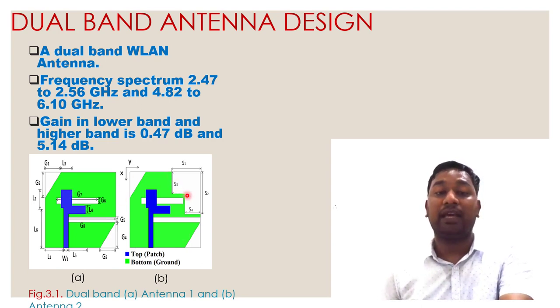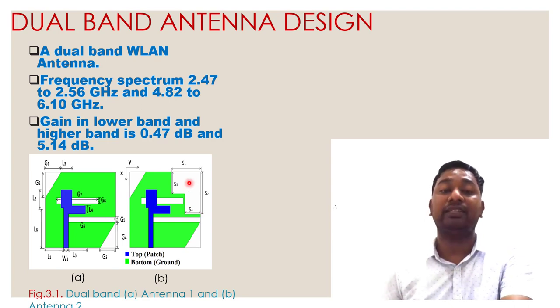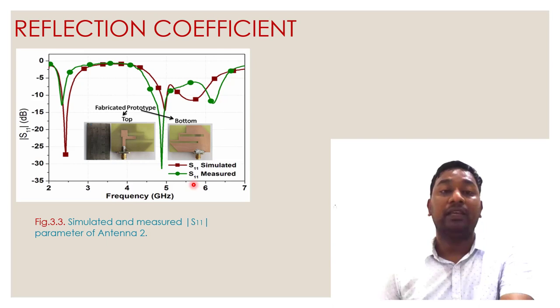There's a difference in ground layer. We cut some portion and placed metamaterial in those portions. So first we'll see those two antennas working in same region, that is dual band region 2.47 to 2.8 gigahertz and 5.26 gigahertz.